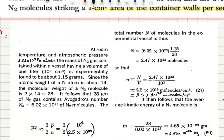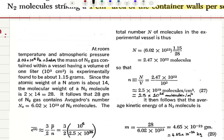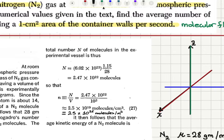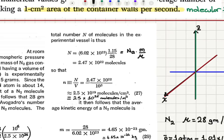It is experimentally found to be about 1.15 grams. Since the molecular weight is 28, we have two nitrogen atoms per molecule, so 28 grams of nitrogen gas contains Avogadro's number 6.02 times 10 to 23 molecules. The total number of molecules is Avogadro's number multiplied by mass divided by molecular weight mu, giving 2.47 times 10 to 22 molecules. The number density N/V is therefore 2.5 times 10 to 19 molecules per centimeter cubed, or 2.5 times 10 to 25 molecules per meter cubed.